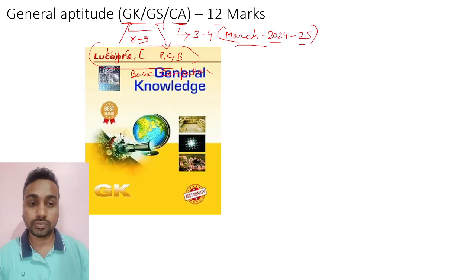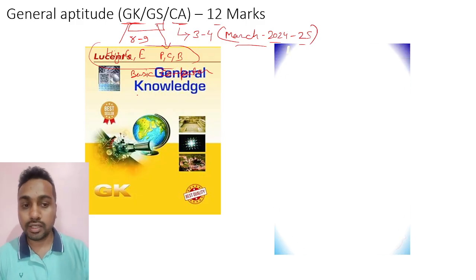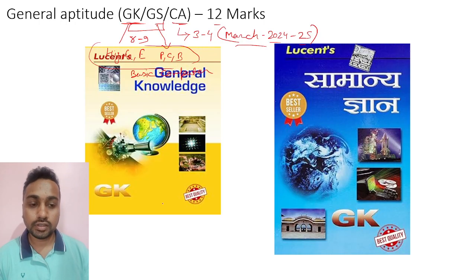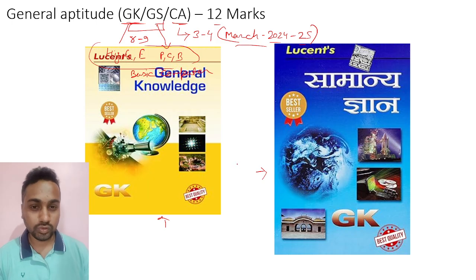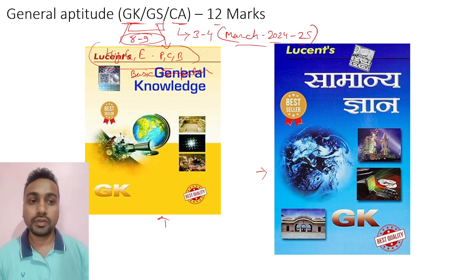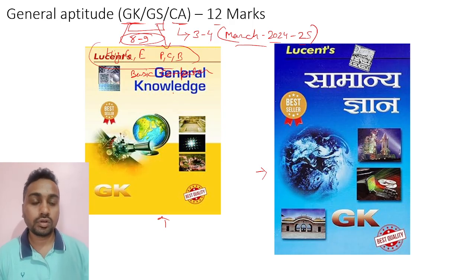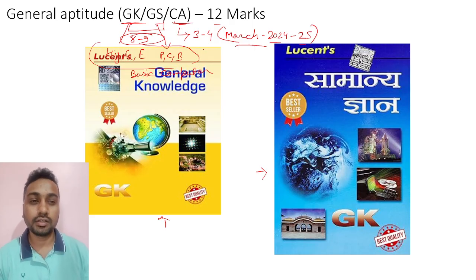All these things you are going to get in a single book — the Lucent General Knowledge book. It is available in English and Hindi, and it is a one-liner type book. If you cover this book, you will get 8 to 9 marks. Everything is there and they will ask questions only from this book, so just follow this book for your GK and GS.